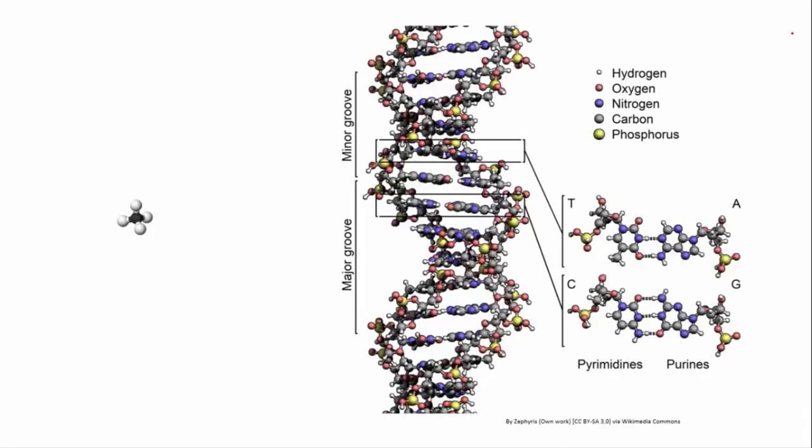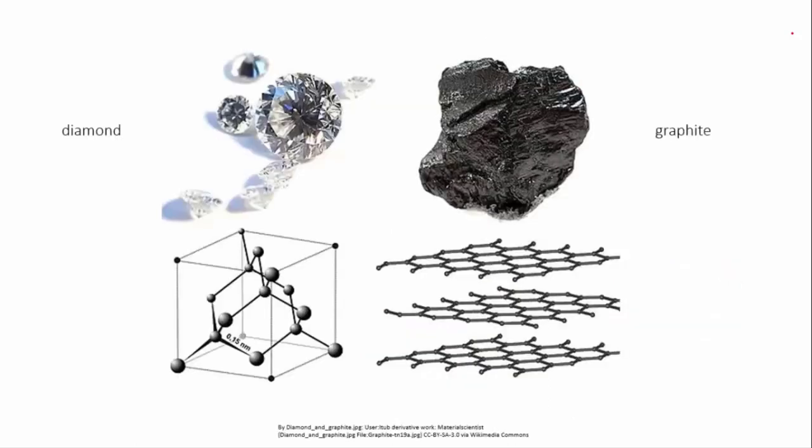It's because of the fact that atoms can form a limited number of covalent bonds that most covalent substances do form separate molecules, although some of those molecules are very big. However, there are a number of covalent substances that form lattice structures, like metals and ionic compounds do.